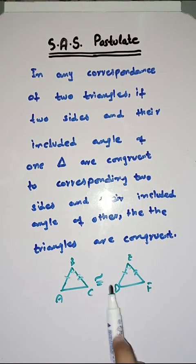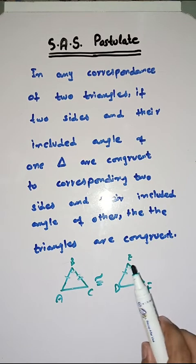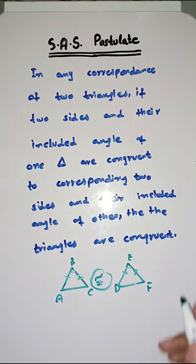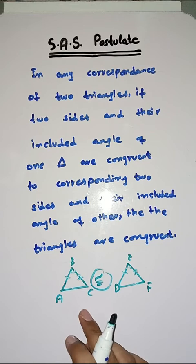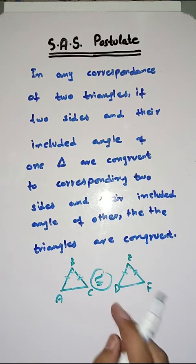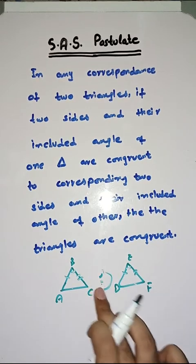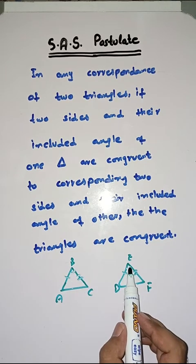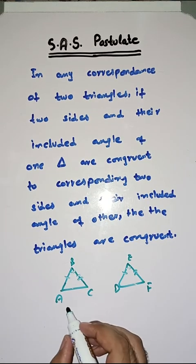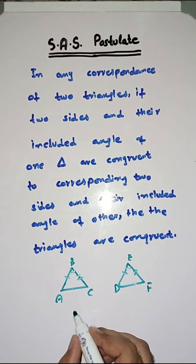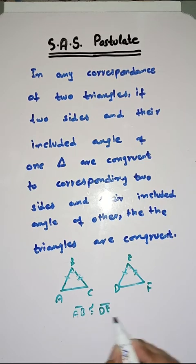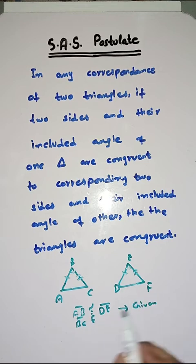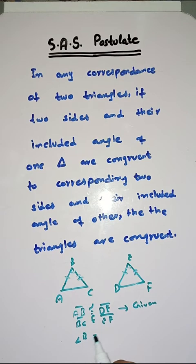What does this mean? If two sides are congruent — congruent means that they are equal in measure. Let's do a comparison: side AB is congruent to side DE, side BC is congruent to side EF, and angle B is congruent to angle E.